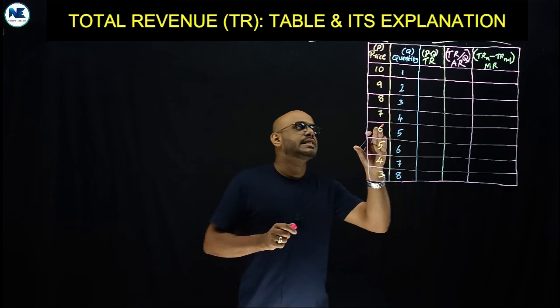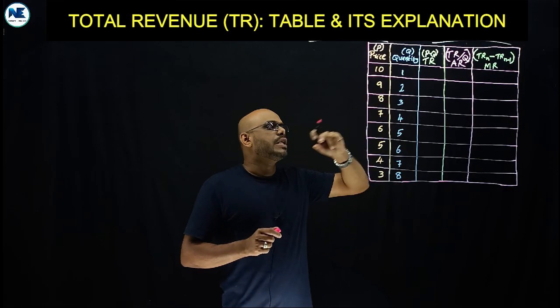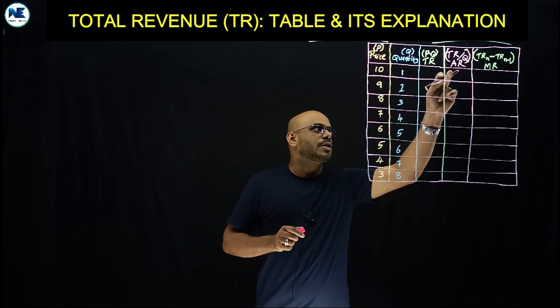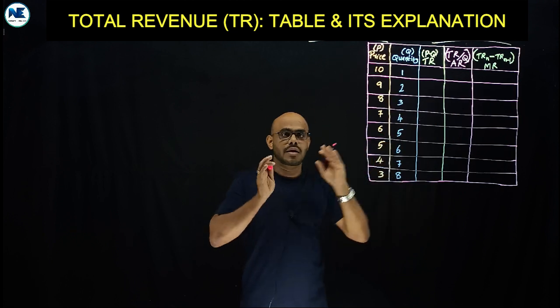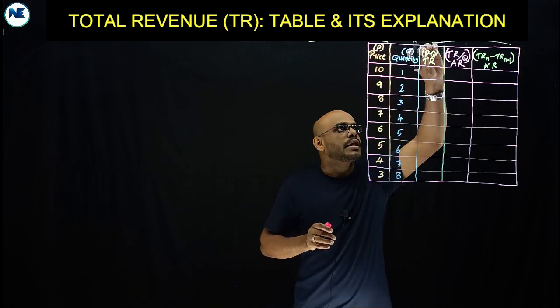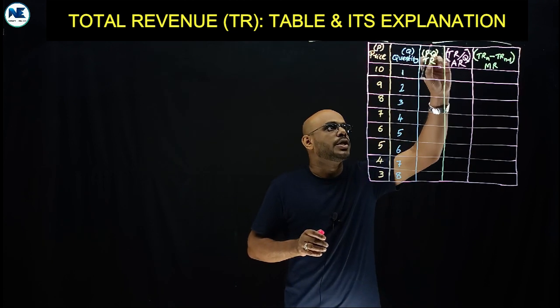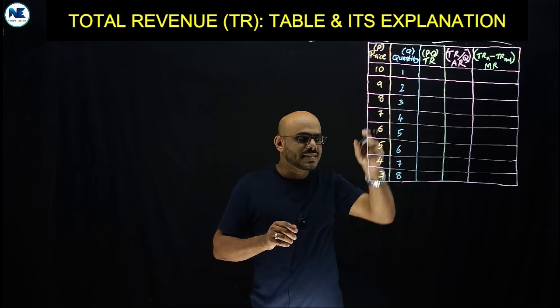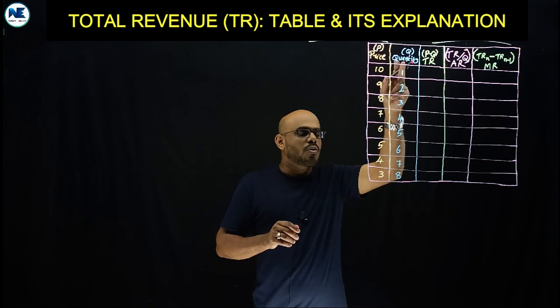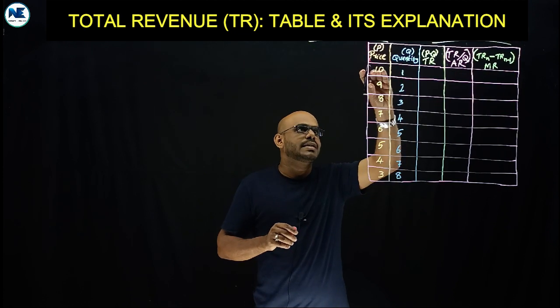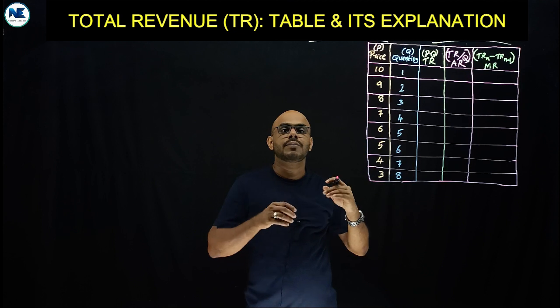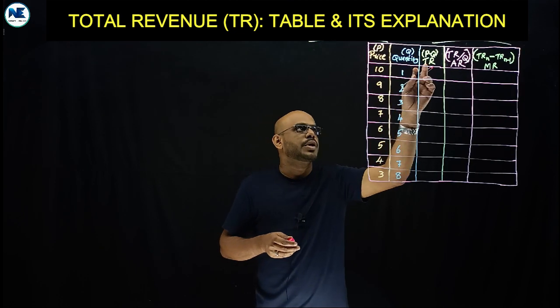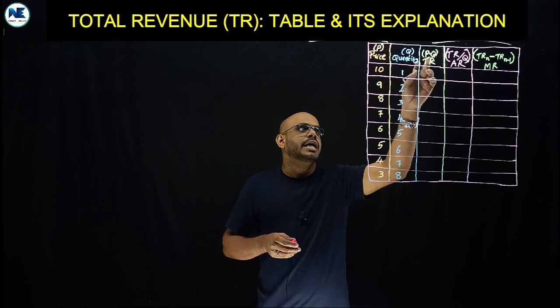You can see a simple table in which we need to find out total revenue, average revenue, and also marginal revenue. The formula is total revenue equals price times quantity. Price times quantity of the output sold in the market.